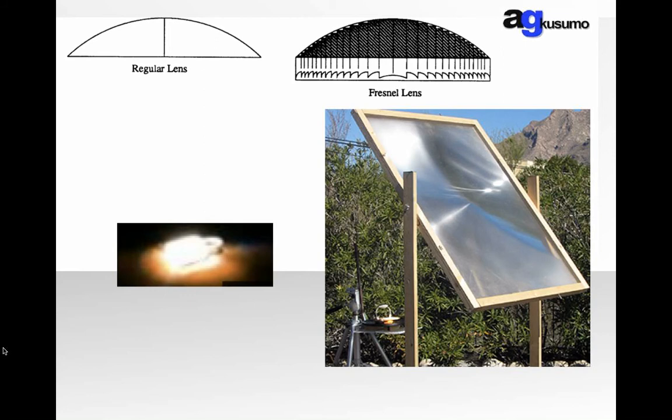To have an efficient dimension, a lens can be flattened, and it's called a Fresnel lens. Heat produced by Fresnel lens is huge. It can melt a padlock.